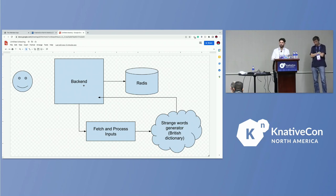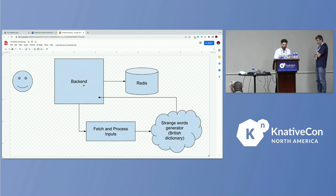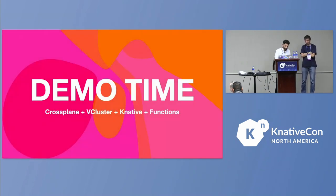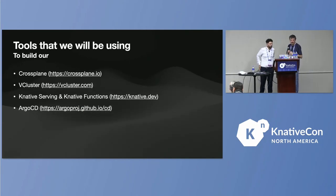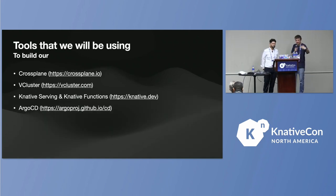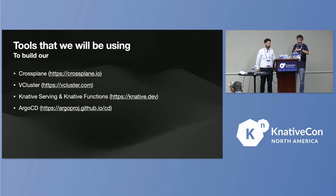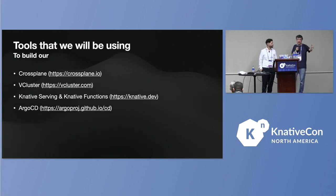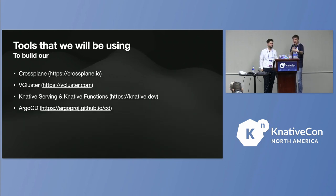For this demo, we are combining Crossplane, which allows us to create abstractions used by end users; vCluster, so we can have as many environments as possible without spinning up a new cluster — extremely useful for development environments; Knative Serving functions; and ArgoCD, which synchronizes things between Git and the cluster. Eventually, Git becomes the interaction interface for developers rather than the cluster itself.